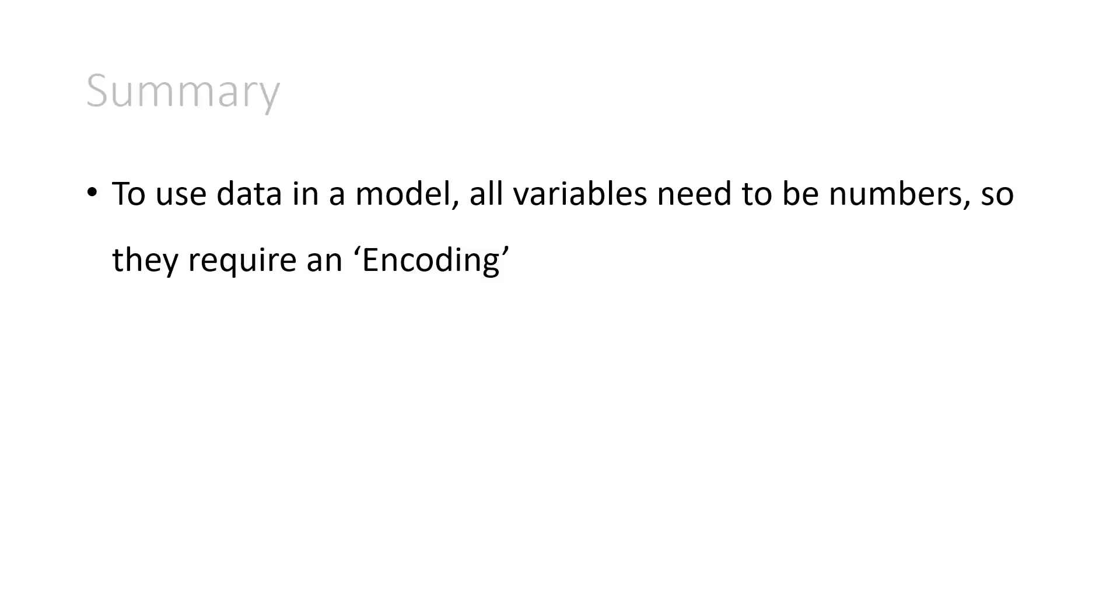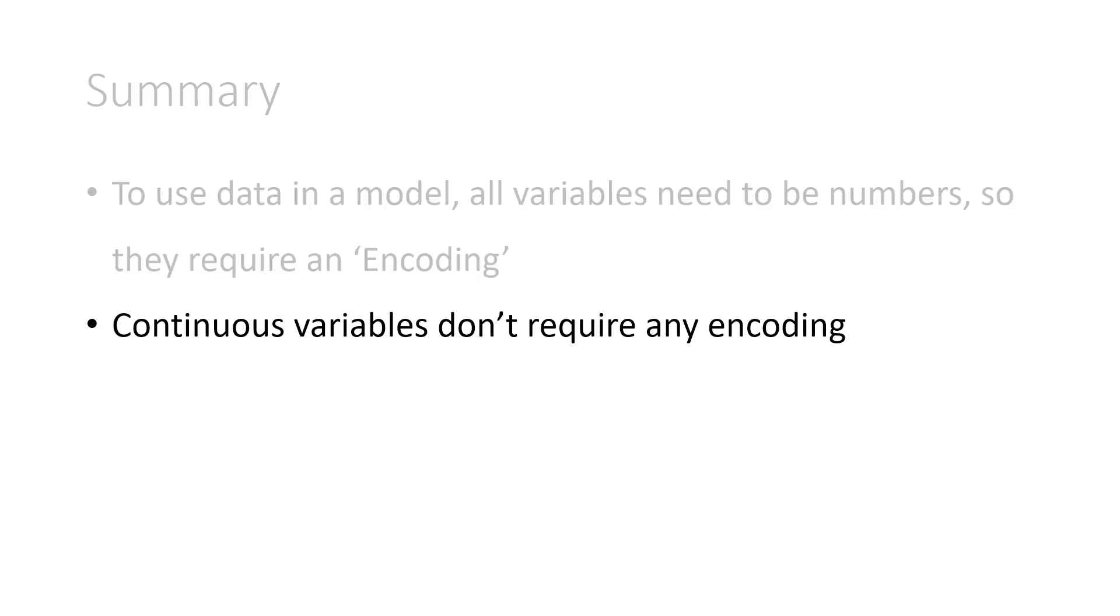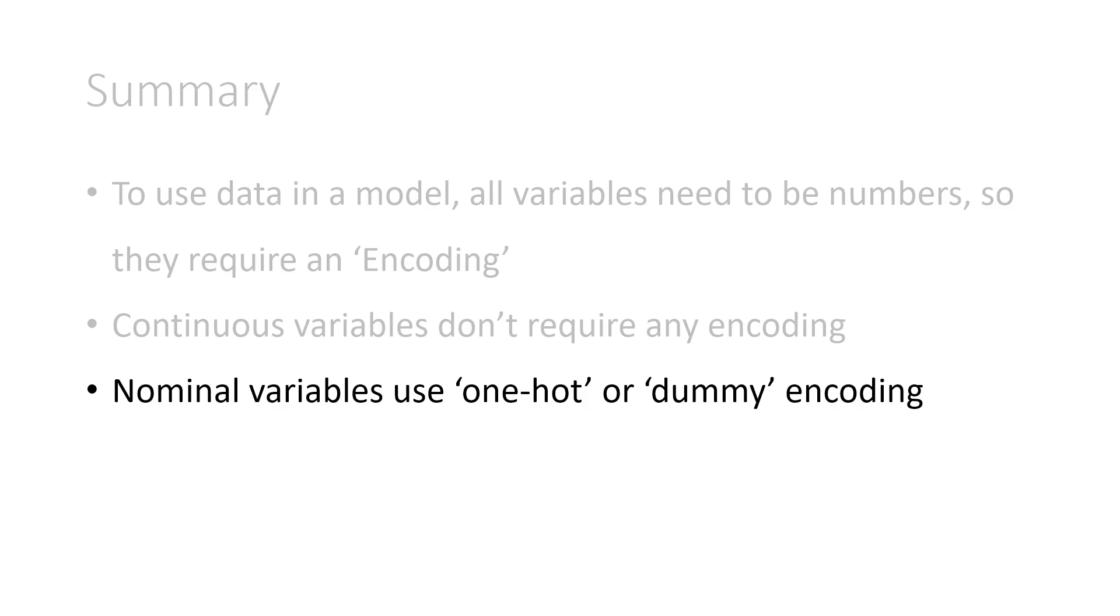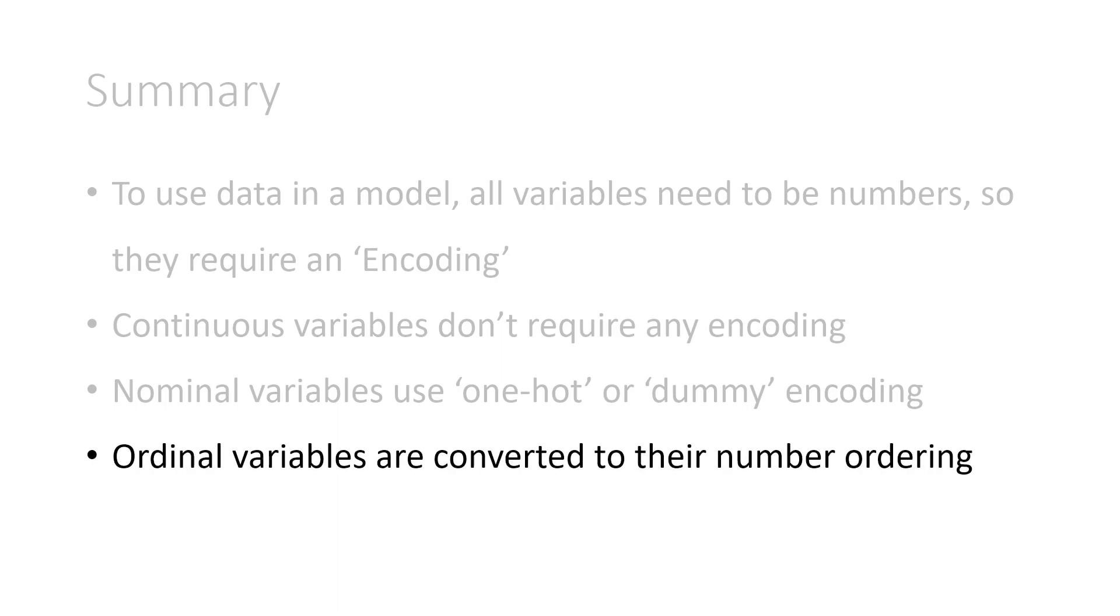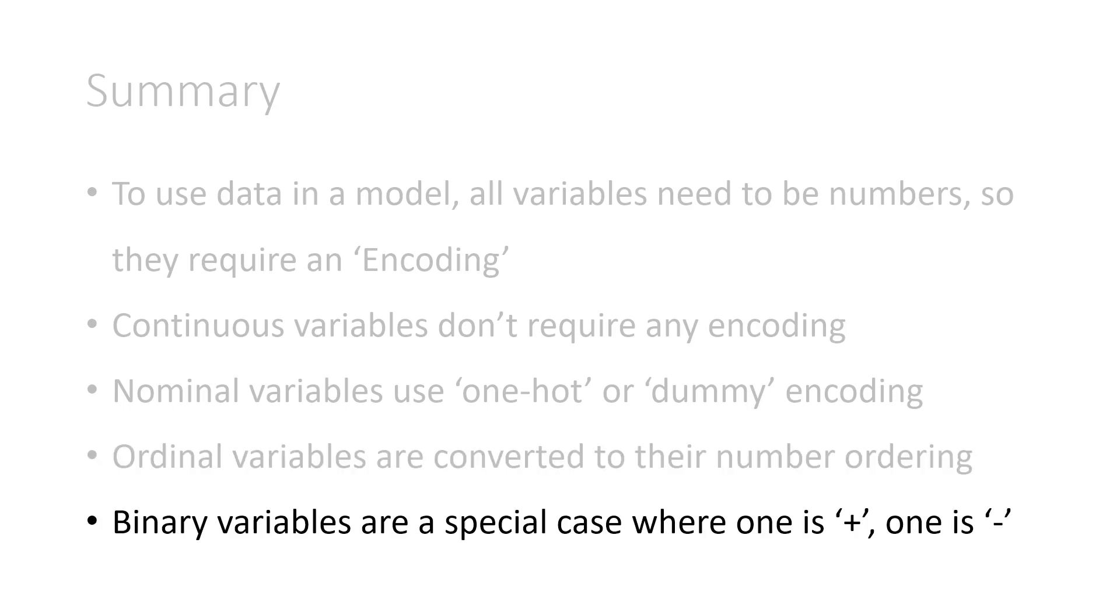If you use data in a model, all variables need to be numbers, so they require an encoding. Continuous variables don't require any encoding. They're already numbers, which is our goal. Nominal variables use one-hot or dummy encoding. That's good because they don't have an order, so it treats them as distinct objects. If you do have an order, ordinal variables are converted to their number ordering to preserve that order. Binary variables are a special case where one is designated as the positive class and the other is designated as the negative class.